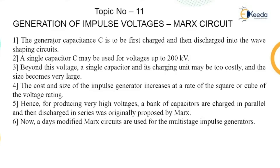In the circuit, the generator capacitance C is to be charged first and then discharged in the wave shaping circuits. A single capacitor C may be used for voltages up to 200 kilovolt, but beyond that a single capacitor and its charging unit may be costly and the size becomes large. The cost and size of the impulse generator increases at a rate of the square or cube of the voltage rating.